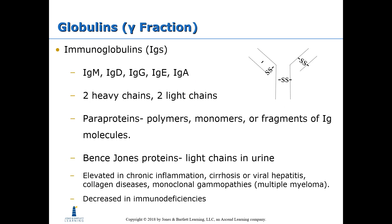In the gamma fraction, we have the immunoglobulins. Immunoglobulins come in five different classes: IgM, IgD, IgG, IgE, and IgA. Immunoglobulins have a typical structure of two heavy chains and two light chains. The heavy chains are the longer chains found on the inside, and the light chains are the smaller chains found on the outside. Within this fraction, you may also find paraproteins, which are polymers, monomers, or fragments of immunoglobulin molecules.